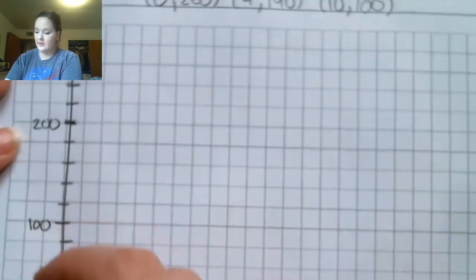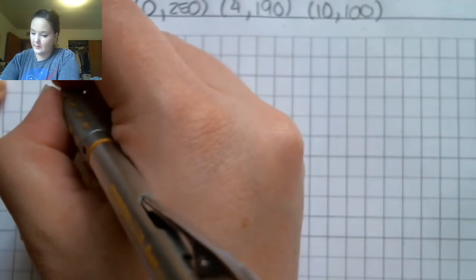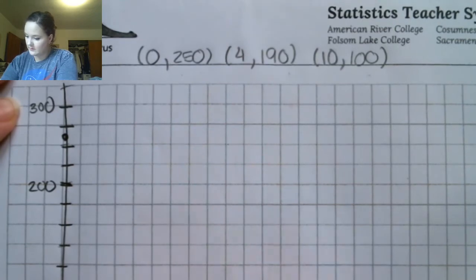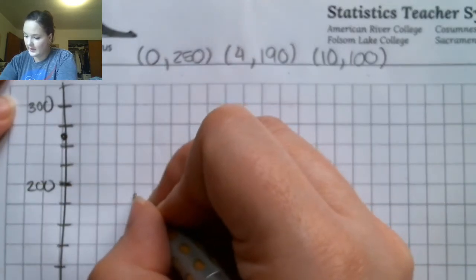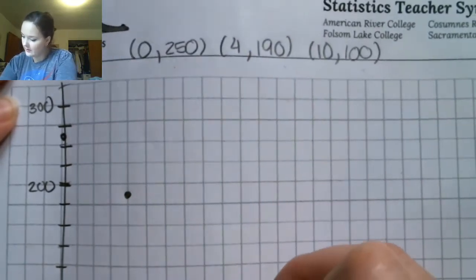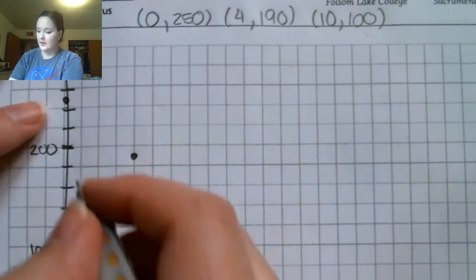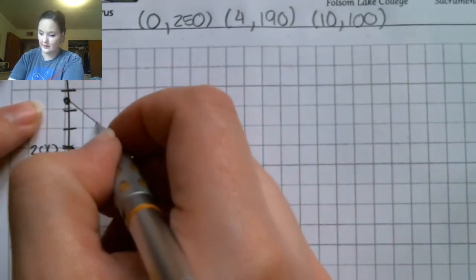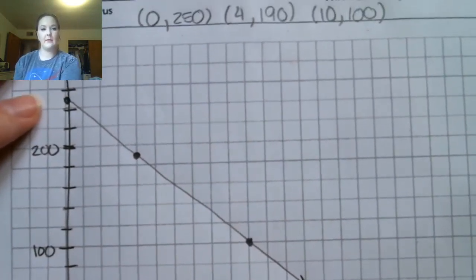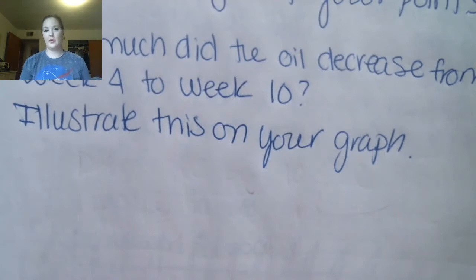So I'm going to graph my three points: (0, 250), (4, 190), and (10, 100). You can see that all three of my points are lined up in a line, and I'm going to go ahead and connect them with a line. That's part C — graphing using the points we had from our table.